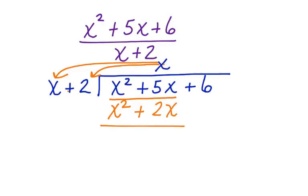Just like in long division, now I subtract. 5x minus 2x is 3x. x squared minus x squared is zero. Those cancel. Bring down the 6.